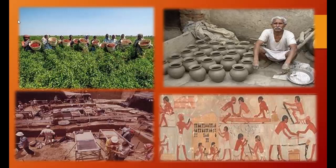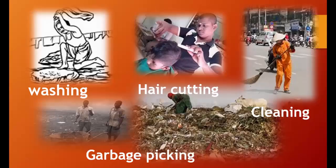This caste system has given rise to great inequalities and discrimination in our society. In our society, people are engaged in different kinds of work like carpentry, pottery, weaving, fishing, farming, and teaching to earn their livelihood. Certain kinds of jobs are valued more than others. Activities like cleaning, washing, cutting hair, and picking garbage are seen as tasks of less value, and people who do this work are seen as dirty or impure.